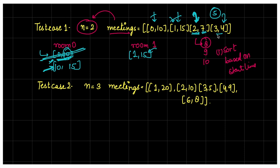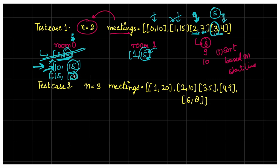Now for meeting 3,4 — the problem says meeting should always take place in the room with the lowest number. Both rooms here have the same end time, so we try to schedule in room 0 since it has the lowest number. Since 3 is less than 15 (room 0's end time), this meeting also gets delayed. It starts at 15 and ends at 16 (duration = 1). The question asks us to return the room that held the most meetings. In this case, room 0 held the most — so the answer is room 0.